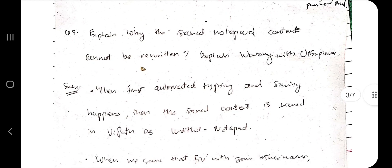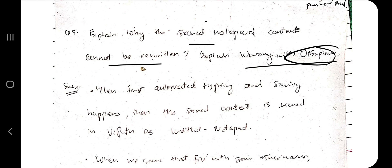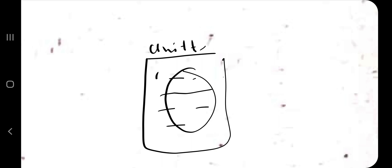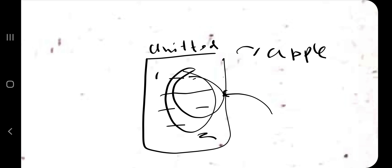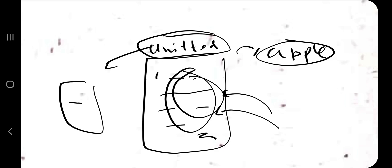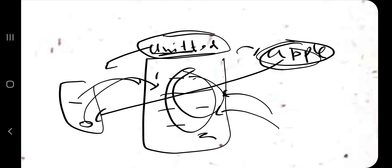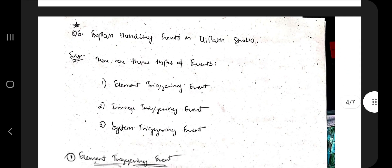The next question is: explain why saved Notepad content cannot be rewritten, and explain working with UI Explorer. If we open Notepad and save it via automation without a name, it defaults to 'Untitled.' If we then save it as 'Apple' and try to automate writing into it again, the automation can't find it because it still searches for 'Untitled' in memory. The solution is to go to UI Explorer and change the stored property name from 'Untitled' to the new name, so the automation can locate and write to the correct file.